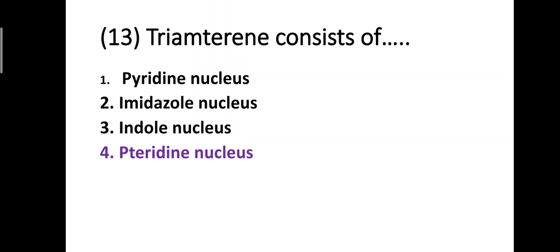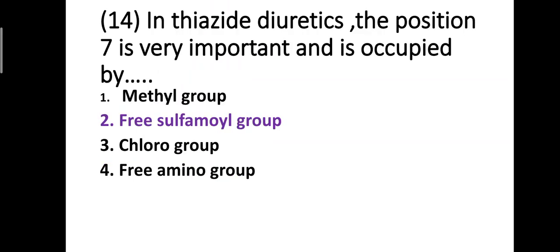Question number thirteen: triamterene consists of which nucleus? Option one: pyridine nucleus, option two: imidazole nucleus, option three: indole nucleus, option four: pteridine nucleus. The correct answer is option four — triamterene consists of a pteridine nucleus.